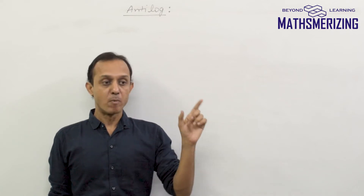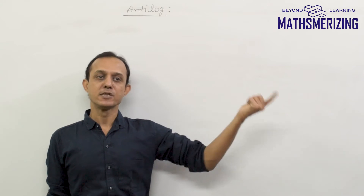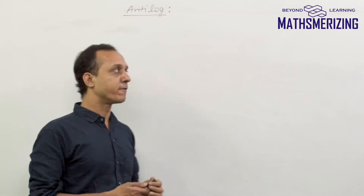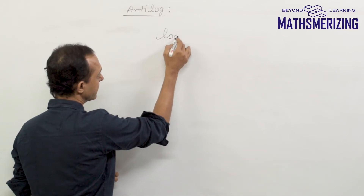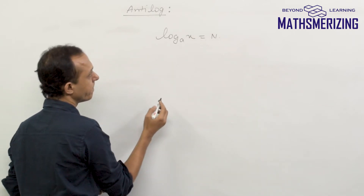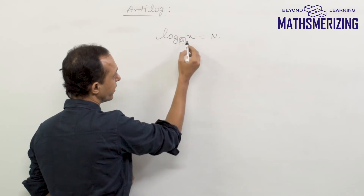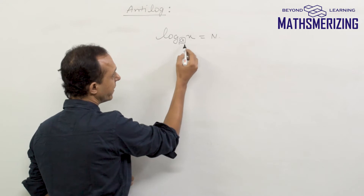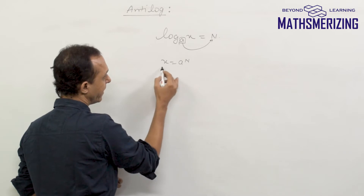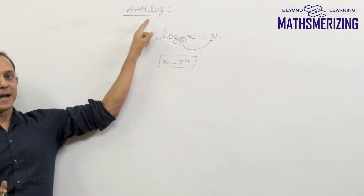As studied in the previous lecture, the modern definition of log associates logarithms with exponential functions. We will now study how to take the antilog of a given logarithm. If log x to the base a equals some number n, then by definition n is the exponent of a that equals x, so we write x = a^n. This inverse operation of log is called antilog.